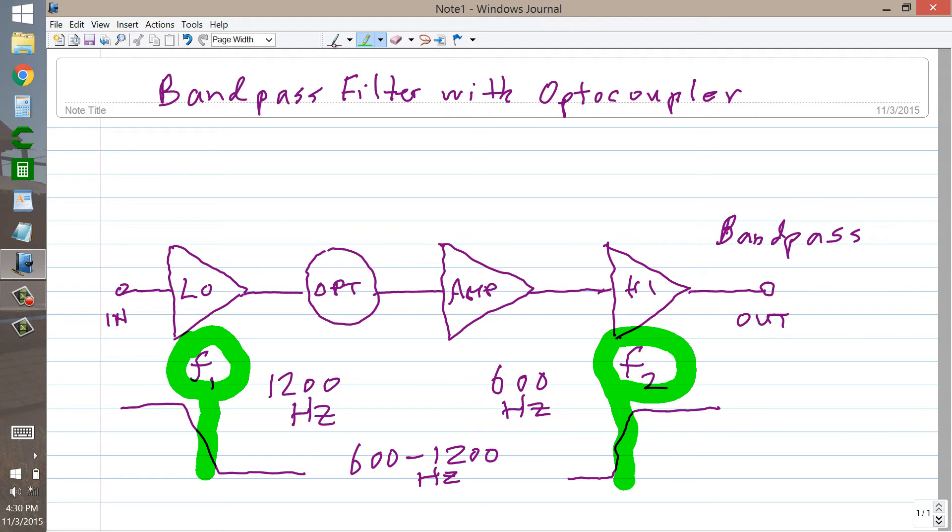So what we have in effect here is a band pass response that looks like this, with this particular frequency right here coinciding to F1, and this particular frequency right here coinciding to F2.